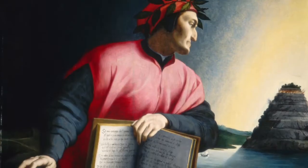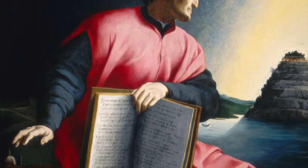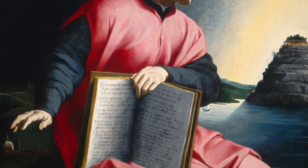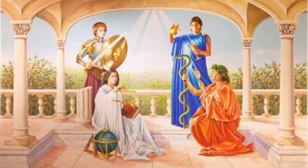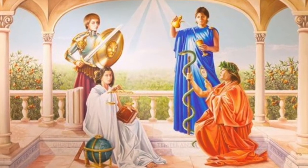Nel primo canto del purgatorio Dante osserva in cielo quattro stelle attorno al polo sud celeste che, nella visione allegorica dantesca, rappresentano le quattro virtù cardinali: prudenza, giustizia, fortezza e temperanza.